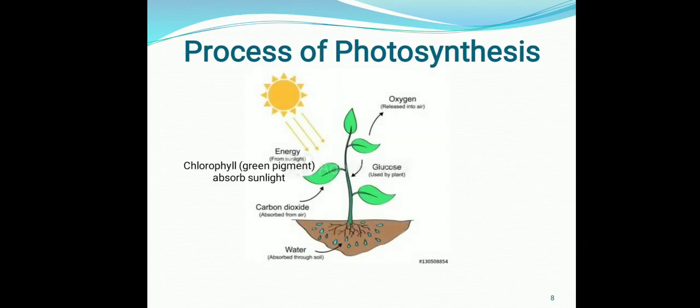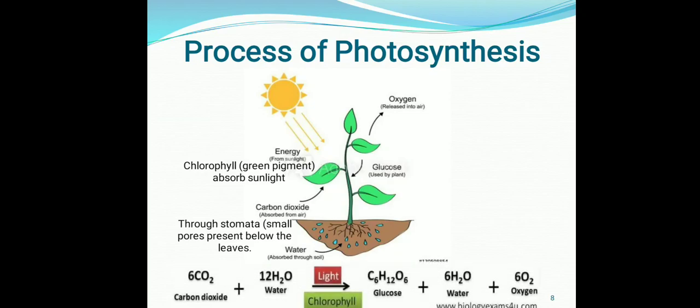Now that you are aware of the essential conditions for photosynthesis, let me show you how photosynthesis takes place. Sunlight is absorbed by the chlorophyll. Carbon dioxide gas is absorbed from the atmosphere through the stomatal opening. Water is absorbed from the root system. When these four essential conditions are fulfilled, they get converted into glucose, water, and oxygen. The equation for photosynthesis is: 6 molecules of carbon dioxide plus 12 molecules of water, combined in the presence of sunlight and chlorophyll, get converted into glucose plus 6 molecules of water and 6 molecules of oxygen.